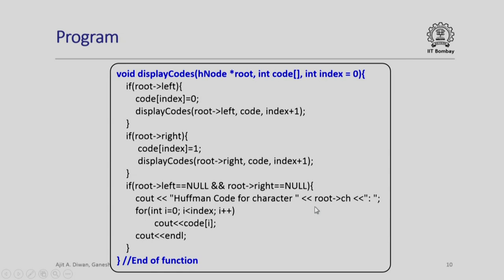We put for i to 0 to that index that we traverse, we simply output code i one by one and that will represent the code for this particular character. It is an extremely simple and straightforward way of traversing this priority queue to determine the code for individual characters.